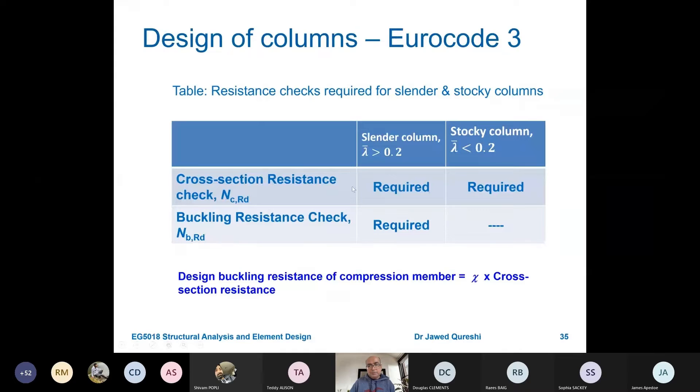The Eurocode 3 procedure for compression members is to check first lambda, which is slenderness. If slenderness is less than 0.2, we do not need to check buckling resistance, just cross-sectional resistance. If slenderness is greater than 0.2, we need to check buckling resistance. How do we work out design buckling resistance? We use a reduction factor approach. NBRD equals chi (reduction factor) times cross-sectional resistance. If we have a 1 meter column and a 10 meter column, their capacity is not the same. The 10 meter column has less capacity because it's very long. If a 1 meter column has capacity of 100 kN, a 10 meter column might be 20 kN, highly reduced.